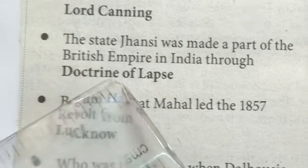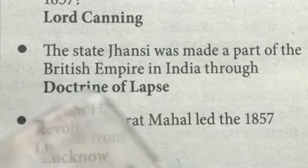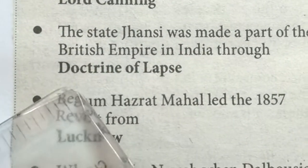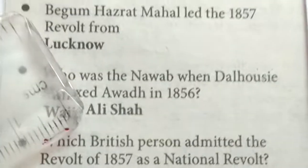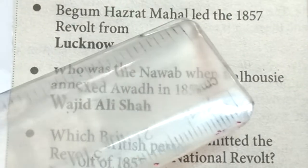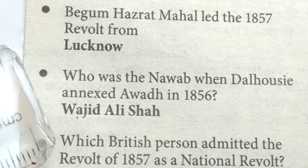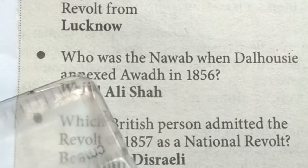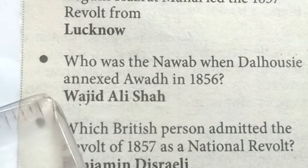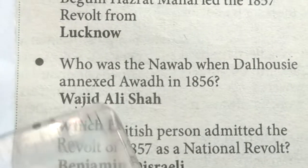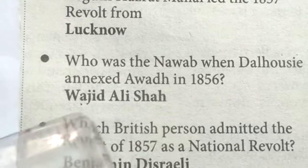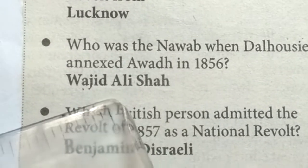The state of Jhansi was made a part of the British Empire in India through the Doctrine of Lapse. Begum Hazrat Mahal led the 1857 Revolt from Lucknow. Who was the Nawab when Dalhousie annexed Awadh in 1856? Wajid Ali Shah.